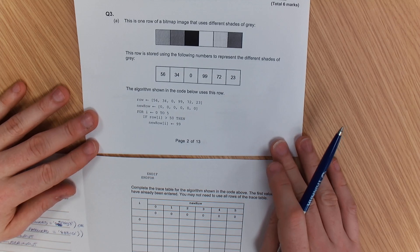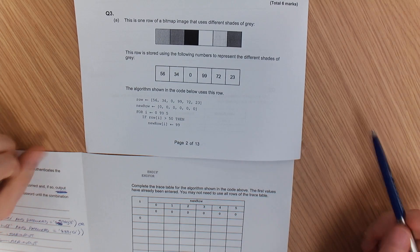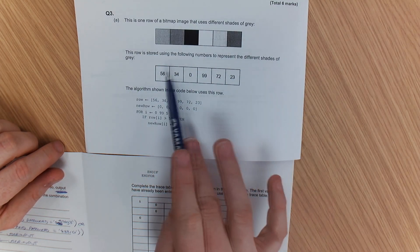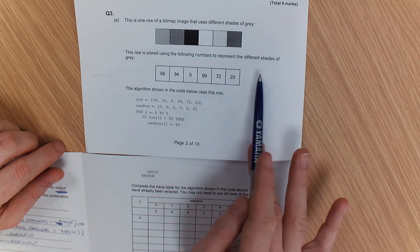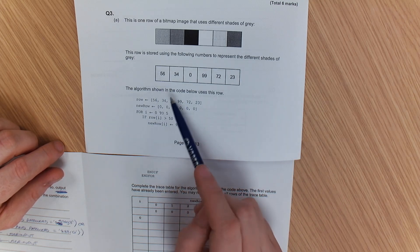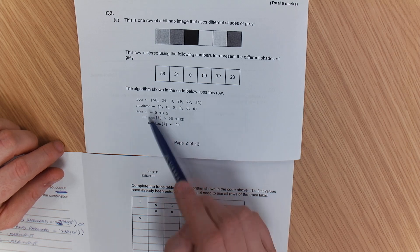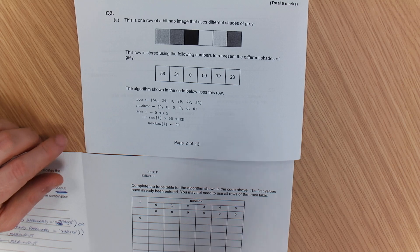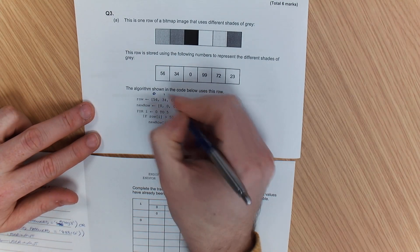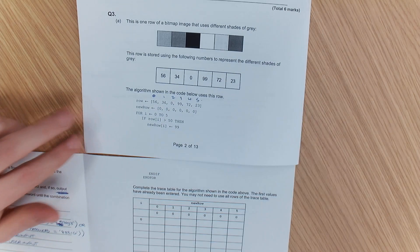We've got here the question. This is one row of a bitmap image that uses different shades of grey. This row is going to store these numbers which represent the colours: 56, 34, 0, 99, 72, 23. Now, in your exam, assume unless it tells you otherwise that the index is 0, 1, 2, 3, 4, 5. Just assume that, please.